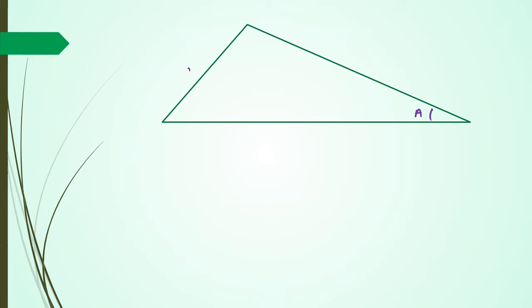Alright guys, so for this proof we're going to be looking at a non-right angle triangle as usual. We're going to call this capital A, little a, we're going to have angle B, little b, and we're going to have angle C and little c.